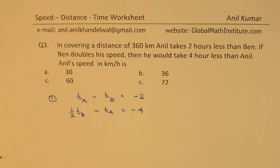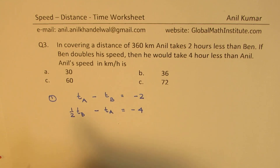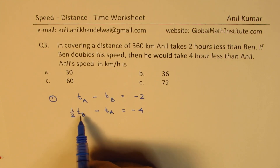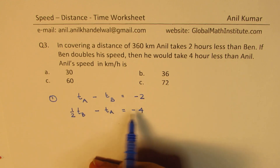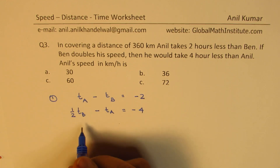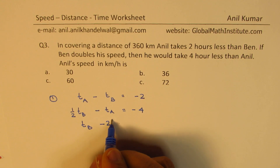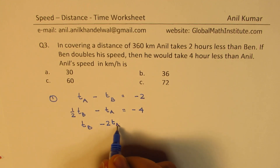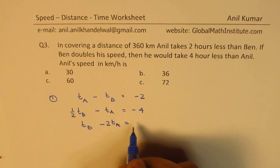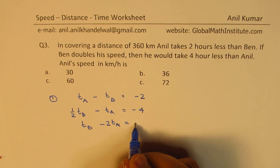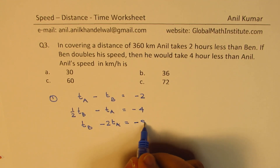Anil's speed in kilometers per hour is what we need to find. Since we want Anil's speed, let's multiply the second equation by two: we get T_B minus 2·T_A equals minus 8. Call this equation three.